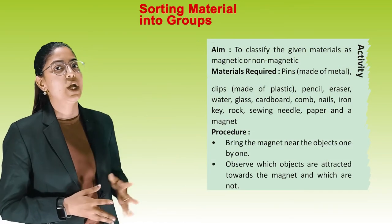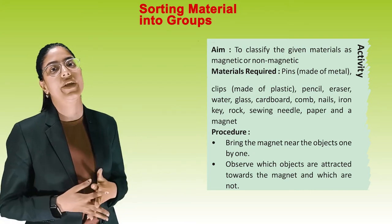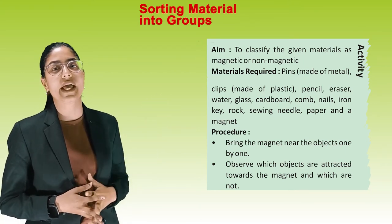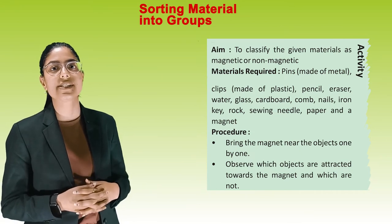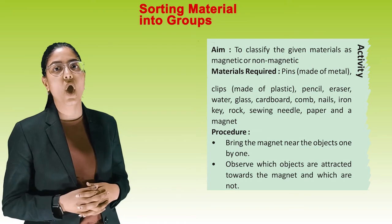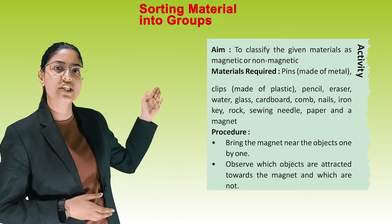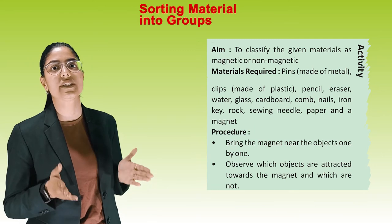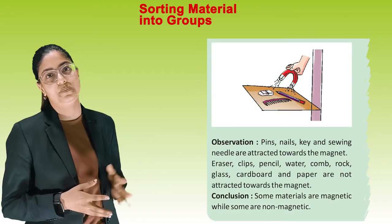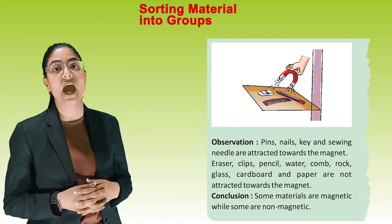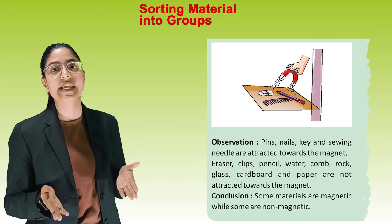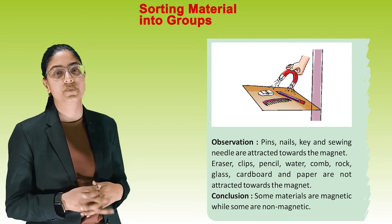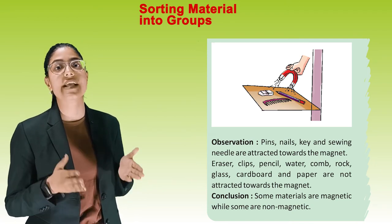Activity — Aim: to classify given materials as magnetic or non-magnetic. Materials required: metal pins, plastic clips, pencil, eraser, water, glass, cardboard, comb, nails, iron key, rock, swing needle, paper, and a magnet. Procedure: bring the magnet near each object one by one and observe which are attracted and which are not. Observation: pins, nails, key, and swing needle are attracted towards the magnet. Eraser, pencil, water, comb, rock, glass, cardboard, and paper are not attracted. Conclusion: some materials are magnetic while some are non-magnetic.